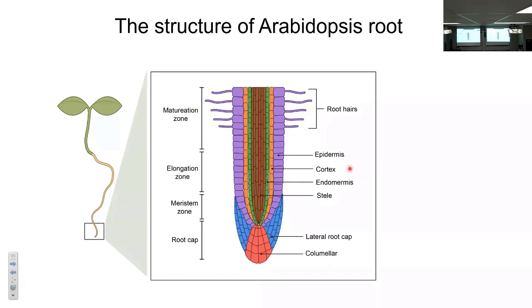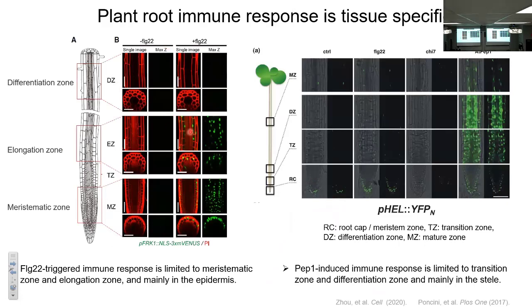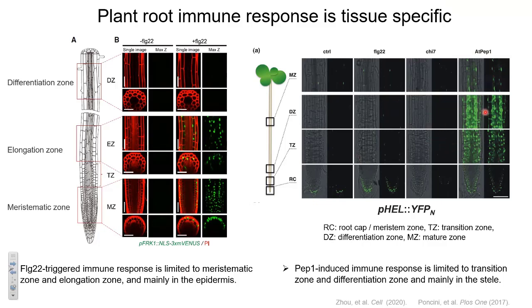The three main zones include four cell types: epidermis, cortex, endodermis, and the stele. According to recent reports, the flg22-triggered immune response is limited to the meristematic zone and elongation zone, with no response in the differentiation zone, and this response is mainly at the epidermis. However, the PEP1-induced immune response is limited to the transition zone and elongation zone, and they are mainly in the stele.